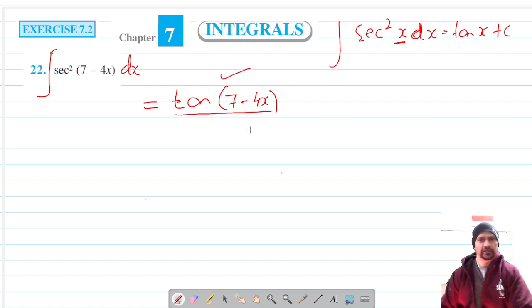We divide with the differentiation of 7 minus 4x, which is negative 4. So this is our answer: minus 1 by 4 into tan of 7 minus 4x plus c.